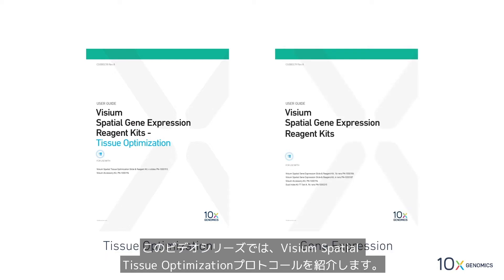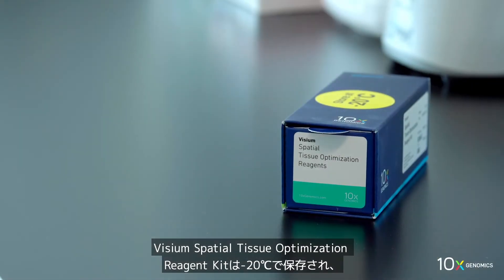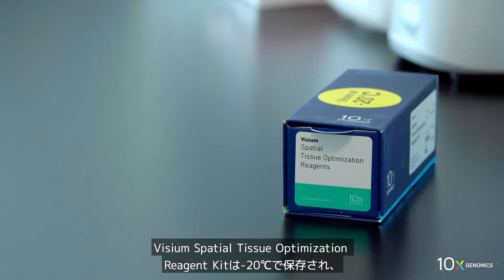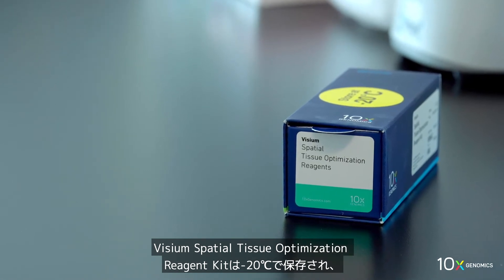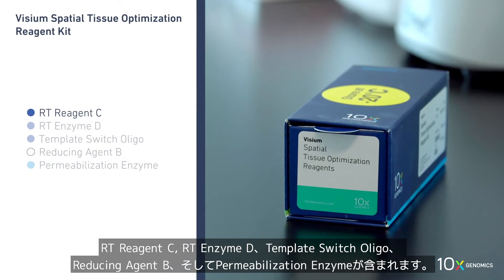In this video series, we will demonstrate the Visium spatial tissue optimization protocol. The Visium spatial tissue optimization reagent kit is stored at minus 20 degrees Celsius and contains RT reagent C, RT enzyme D, template switch oligo, reducing agent B, and permeabilization enzyme.